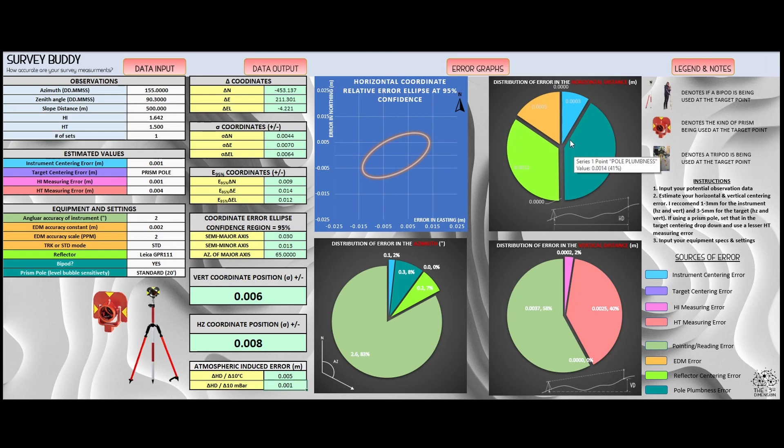The next three graphs are the distribution of error in the horizontal distance, vertical distance, and azimuth, and how they are made up from the sources of error. We've already went over these eight sources of error: the instrument centering error, the target centering error, or the pole plumbness error (it's either or in that situation), the height of instrument measuring error, the height of target measuring error, the pointing and reading error (that's from the instrument manufacturer), same with the EDM error, and the reflector centering error.